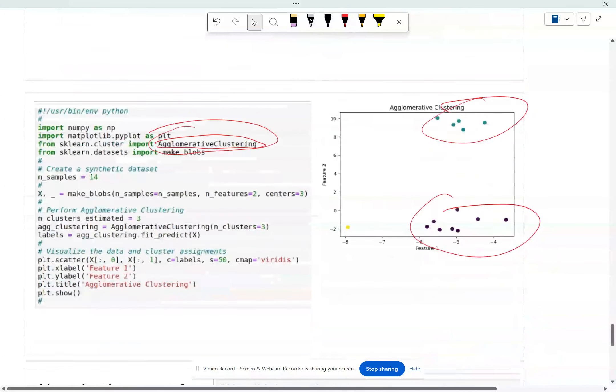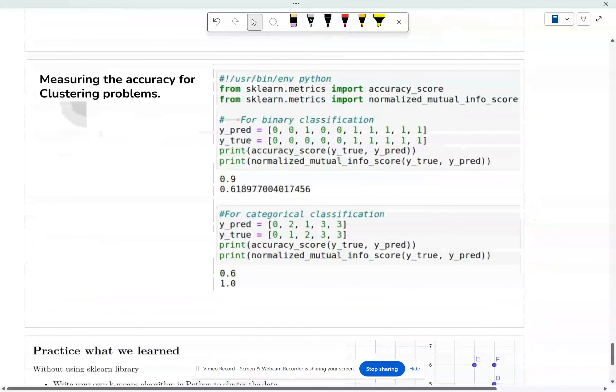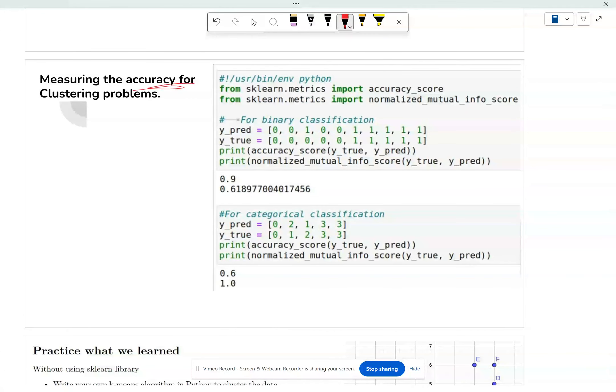But it's actually better to measure this thing called the mutual information. So how do you measure how well you did for the clustering if you have the true label to test it out? Well, like I said, let's say this is the predicted and this is the true.